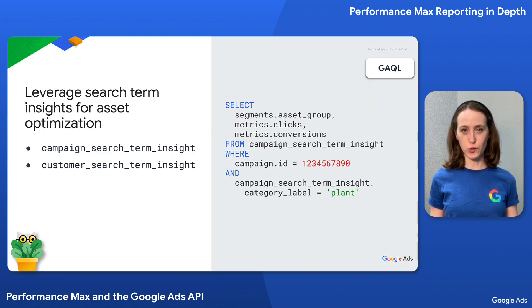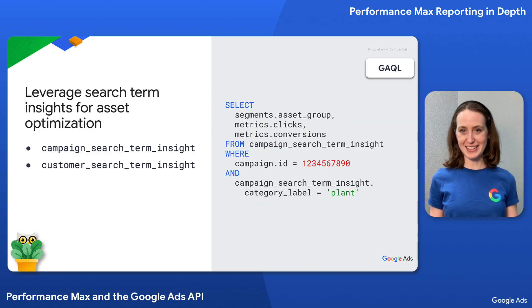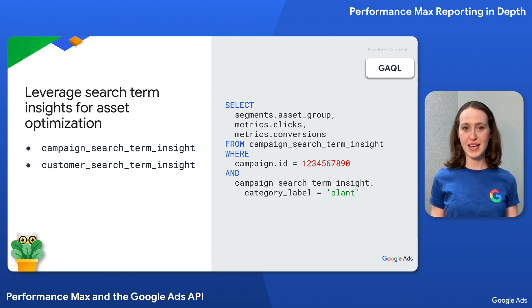Applying this in a GAQL query, we could leverage the campaign's search term insight resource to look at how performance breaks down by asset group within that campaign and the plant category label.